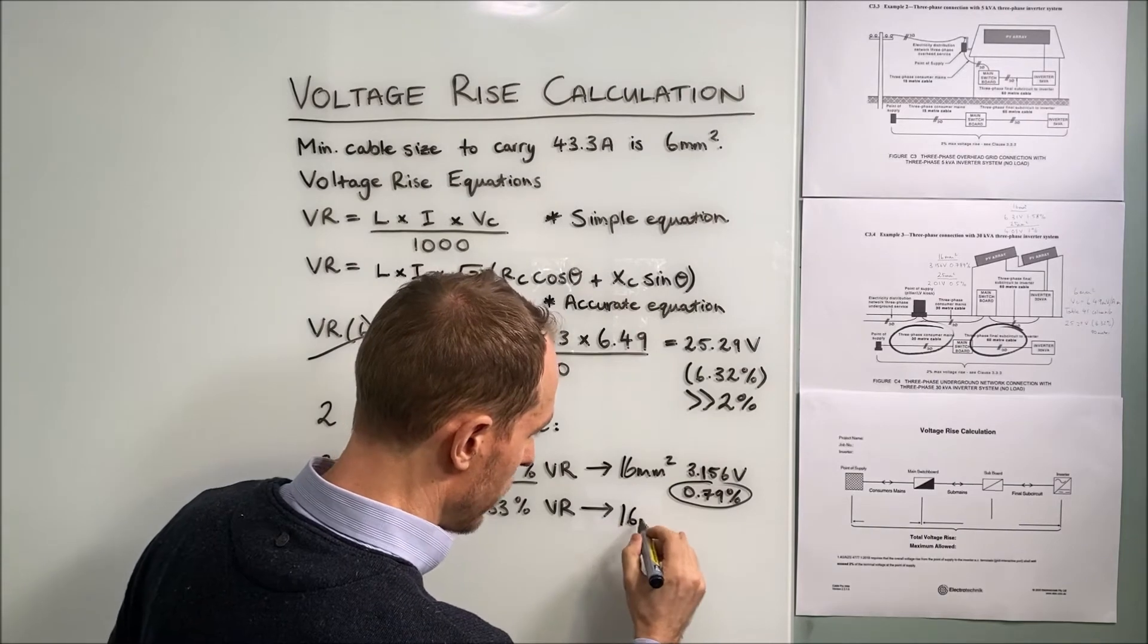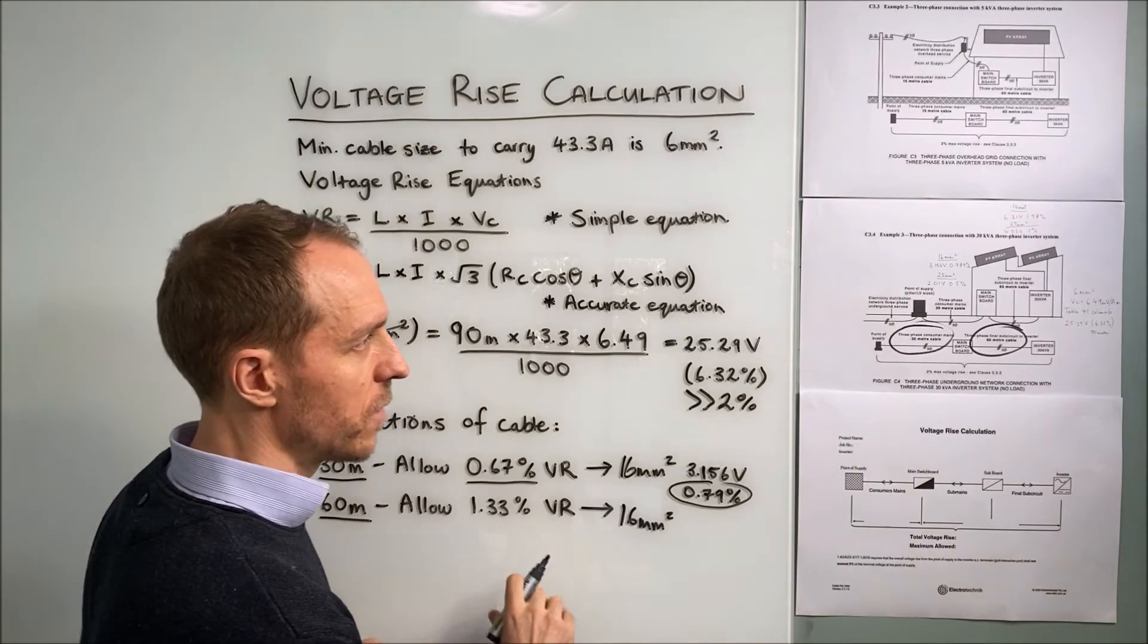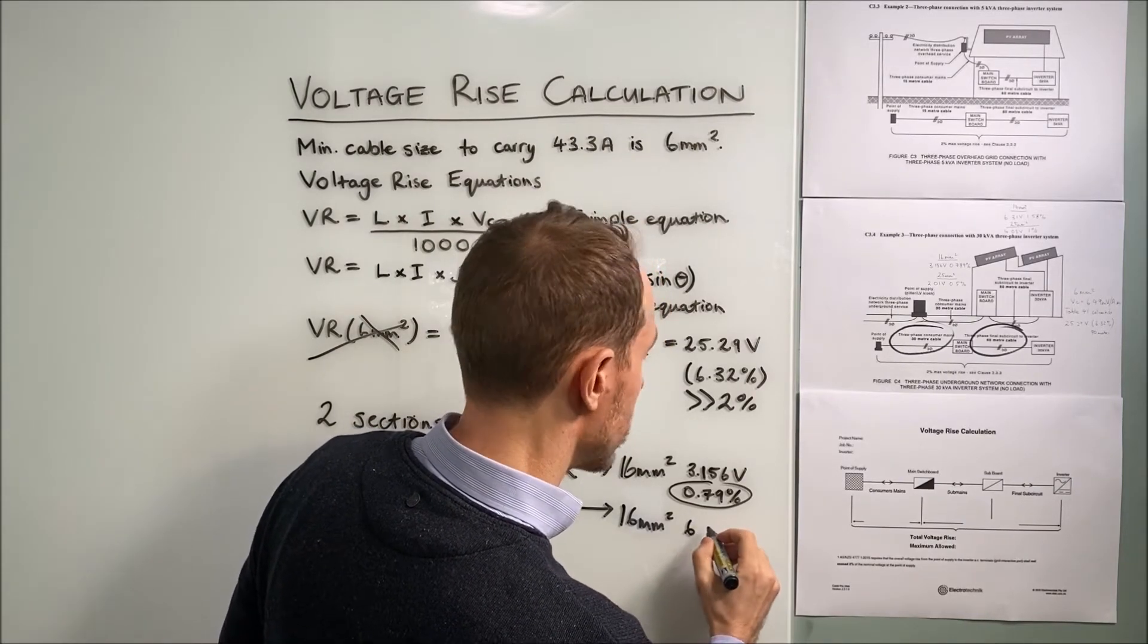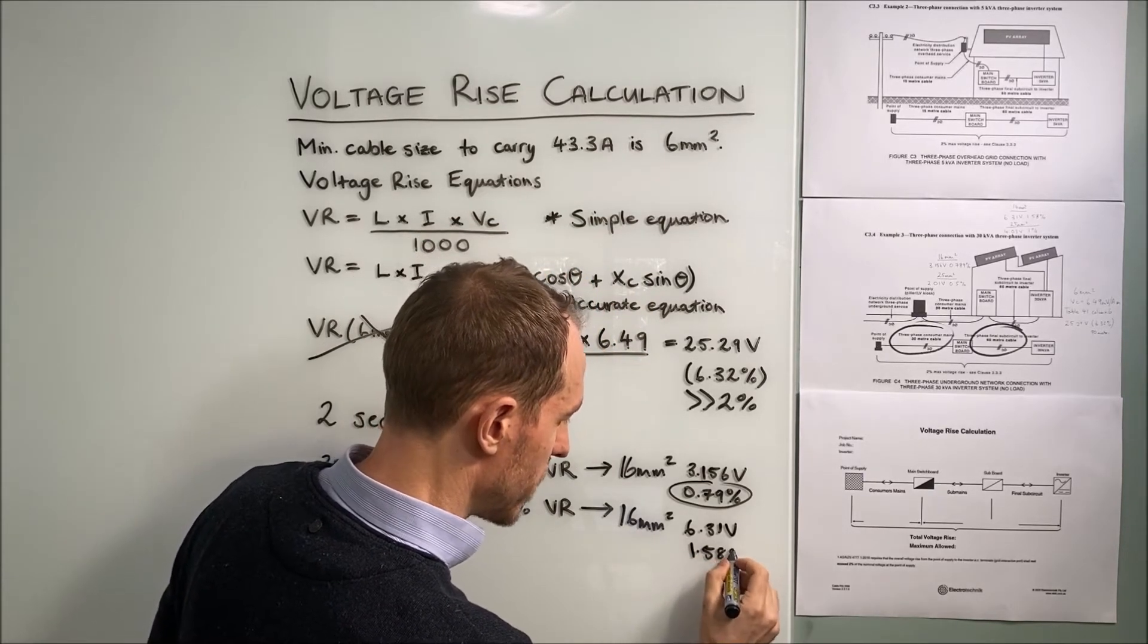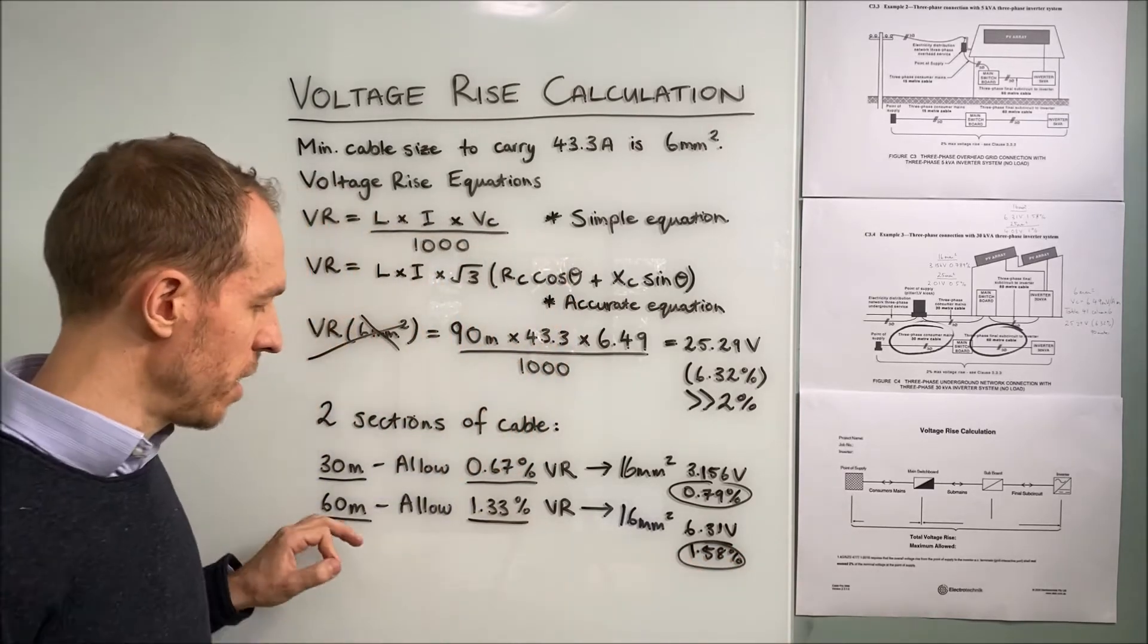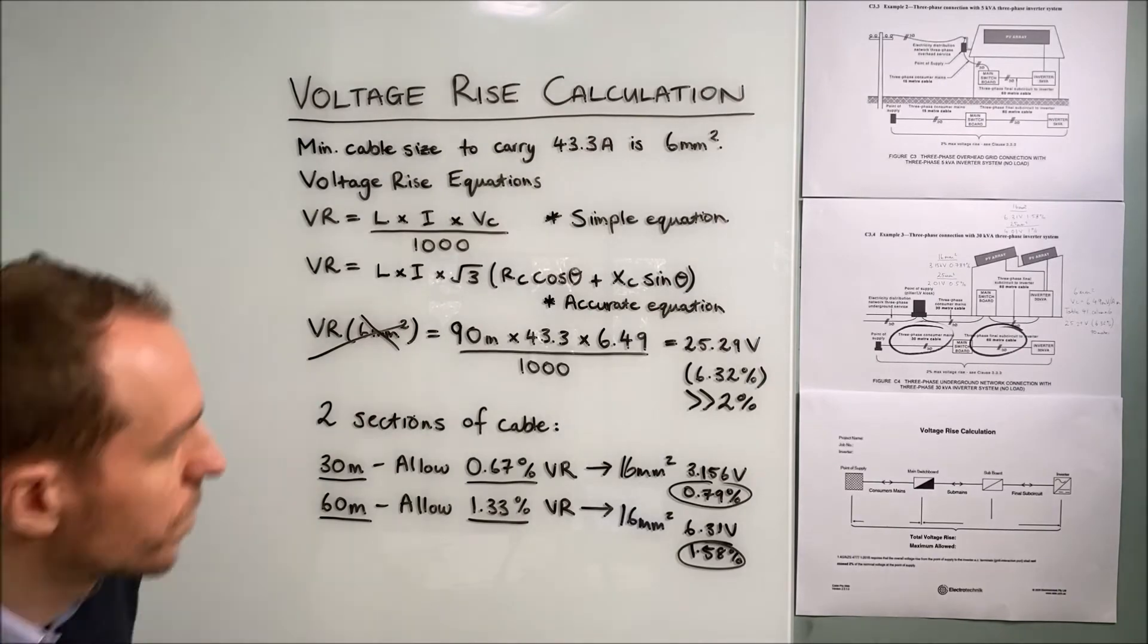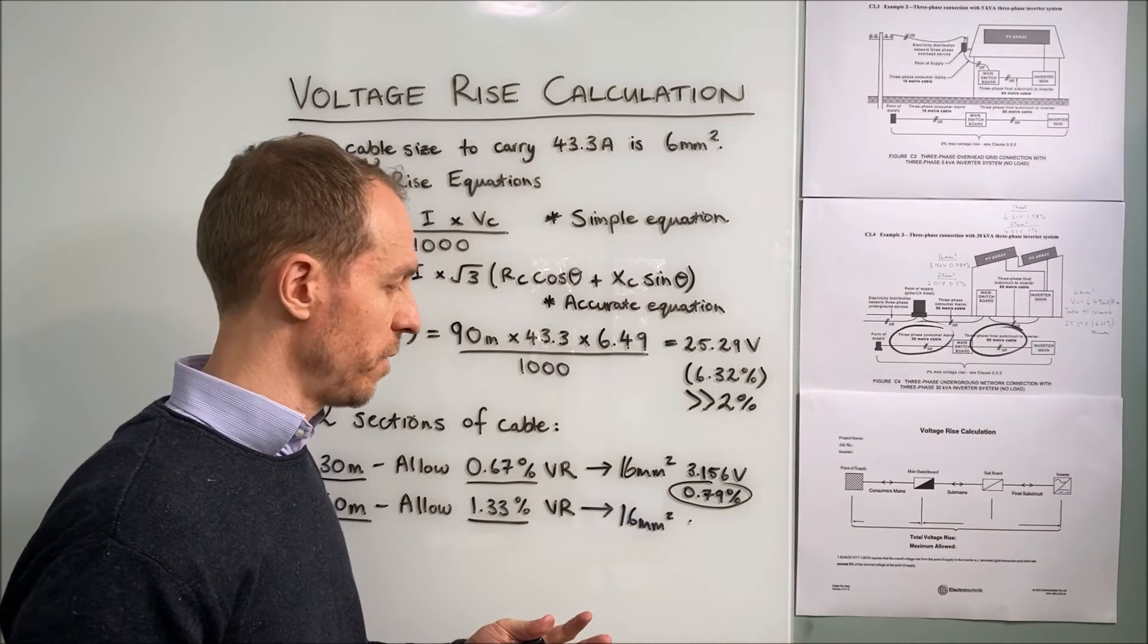16 square millimeter cable voltage rise for the 60 meter section. We calculated the result by hand to be 6.31 volts or 1.58% which is larger than our allowable limit of 1.33%. I'll move to the next cable size up and we'll see if we meet our requirement.